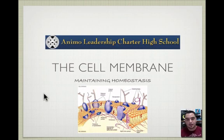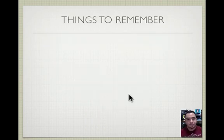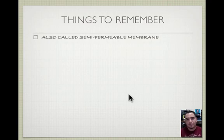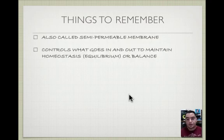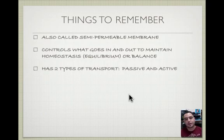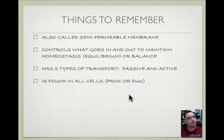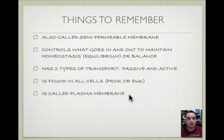The cell membrane maintains homeostasis — it's a wonderful structure in our cells. Remember: it's also called the semi-permeable membrane. It controls what goes in and out to maintain balance, homeostasis, equilibrium — they all mean the same thing. It has two types of transport: passive and active. Passive requires no energy; active uses energy. It's found in all cells, prokaryotic or eukaryotic. It's also called the plasma membrane.